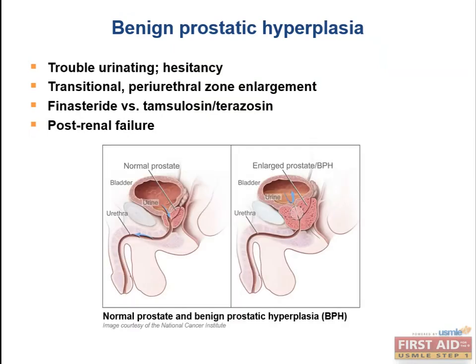Enlargement of the prostate gland constricts the urethra at the periurethral zone, ultimately causing decreased passage of urine. This is very common in older men.